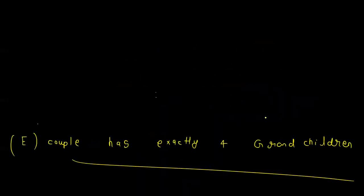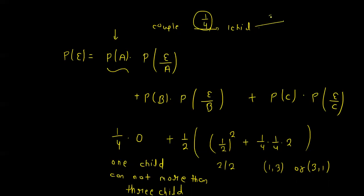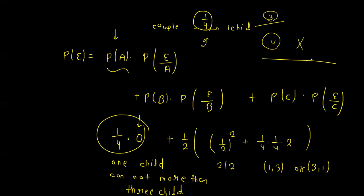The couple will eventually get 4 grandchildren. In case one, if the couple has one child, the probability is 1/4. But the probability of that one child producing 4 grandchildren on their own is 0, because a child can have at most 3 children.